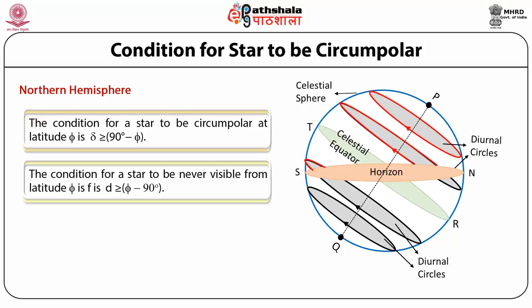For an observer on the equator, the latitude phi equals 0. For such an observer, the condition for a star to be circumpolar requires its declination to be greater than 90°. But the maximum value of declination is 90° north or south, so there is no circumpolar star for an observer at the equator.